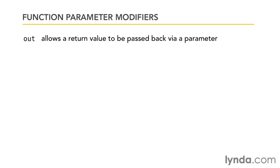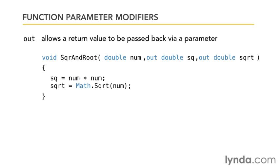Let's take a look at an admittedly contrived example. Suppose I had a function named square and root. Square and root takes a number as its first parameter, and I wanted to return both the square of that number and the square root of that number. I could pass in a parameter named sq, which would be the square, and I put the out keyword in front of it. I do the same thing for another parameter named sqrt, and I also put the out keyword in front of that type name for that parameter.